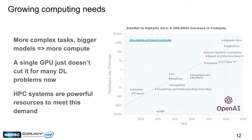As we tackle more complex tasks with bigger deep learning models and larger datasets, the amount of compute needed to train those models grows. Over time, the compute needed to train deep learning models is growing exponentially, as shown in the OpenAI plot. We are clearly in a regime where a single GPU doesn't cut it for many deep learning problems, so we need HPC systems to tackle these challenges.